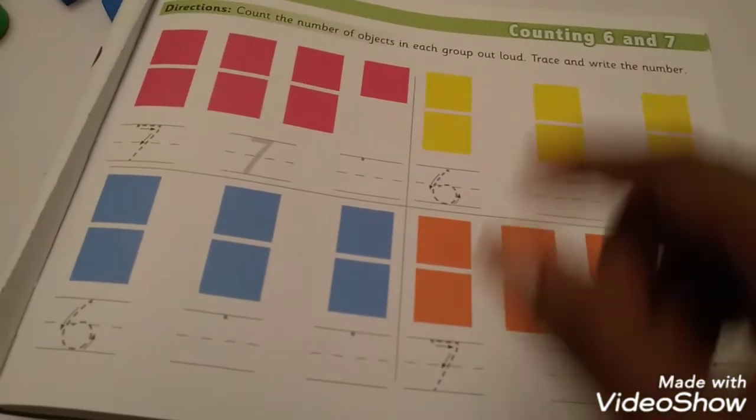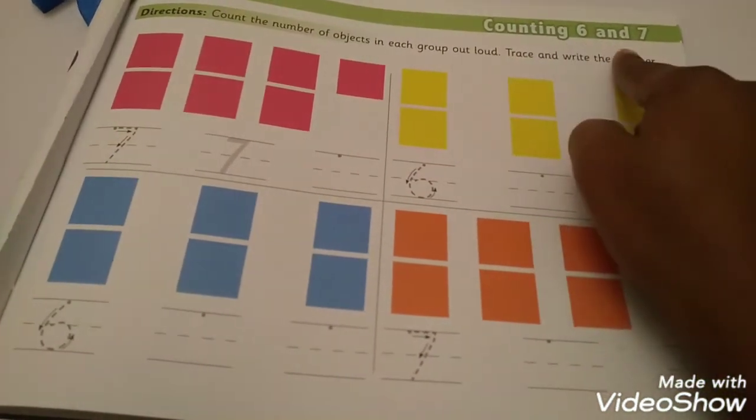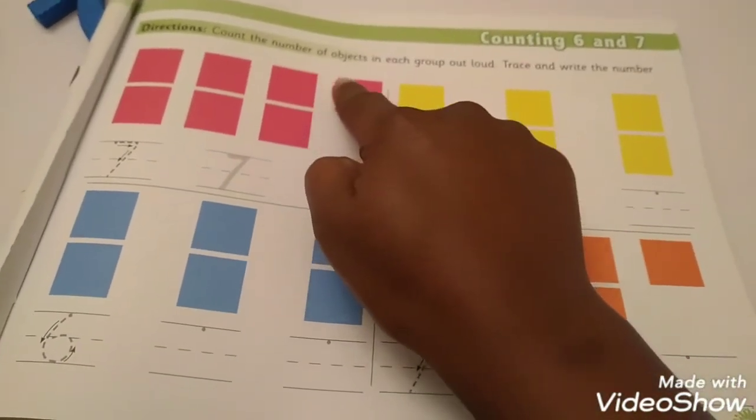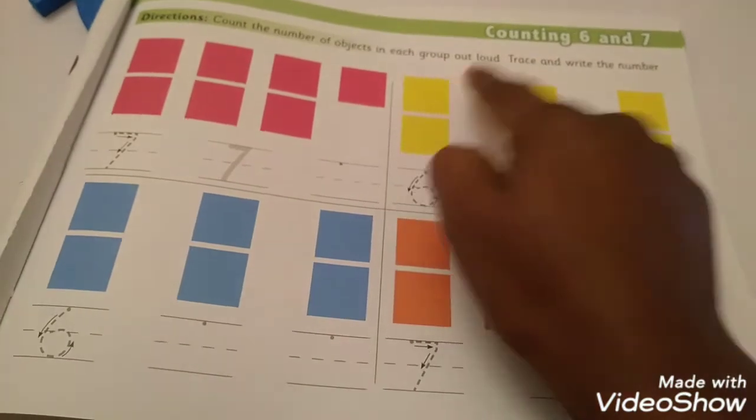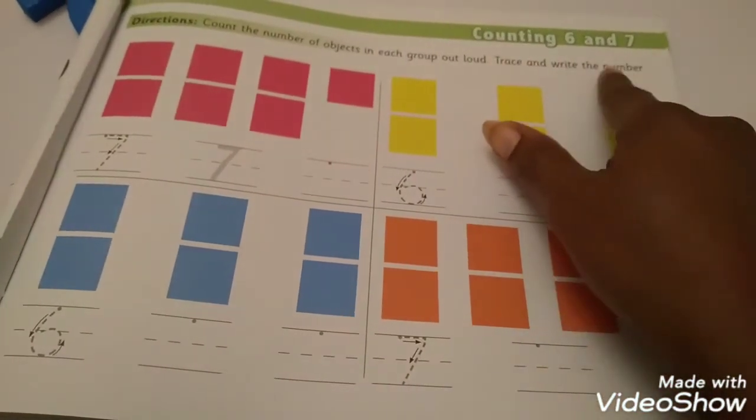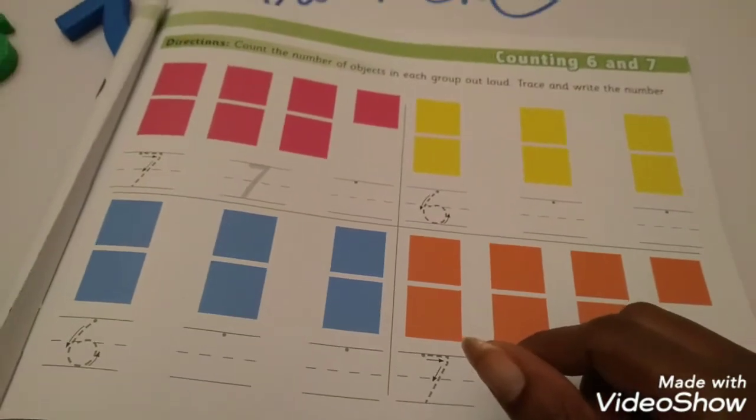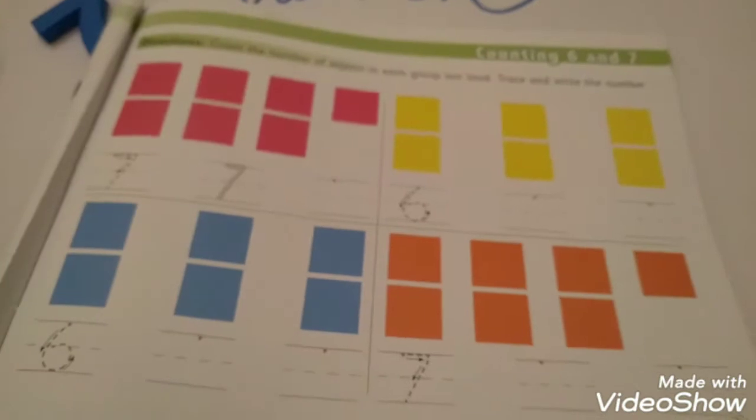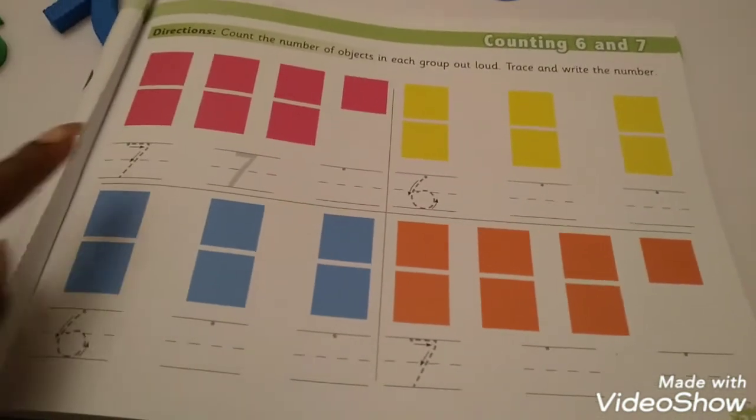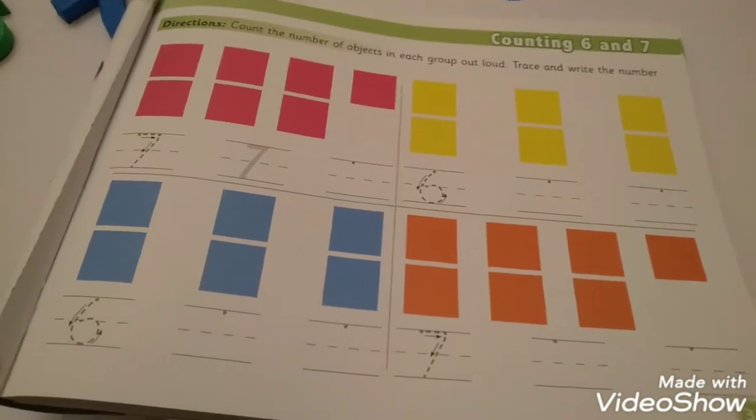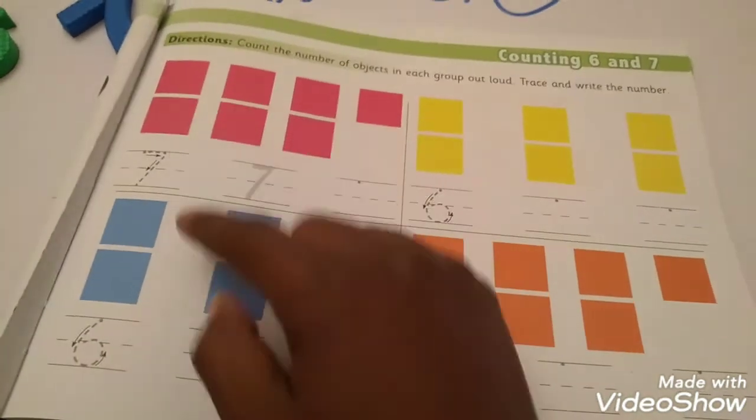Our task for today is counting 6 and 7. You're going to count the number of objects on each group out loud. Then, you're going to trace and write the numbers. So first, you're going to count the blocks. And whatever number is at the bottom, you're going to write. Circle. So how many blocks is here? Let's count them.